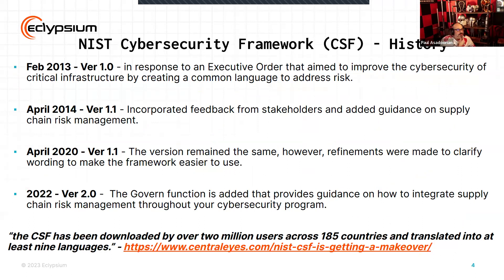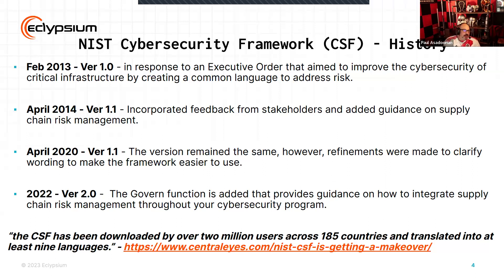Let's look at the NIST cybersecurity framework. Version 1 was actually published in 2013, in response to an executive order aiming to improve the cybersecurity of critical infrastructure. It defined the identify, protect, detect, respond, and recover functions, which provides a nice framework for people to start thinking about how they'd formulate their cybersecurity policies. It's used as a reference guide and is very well adopted — 2 million users across 185 countries have downloaded the NIST CSF.